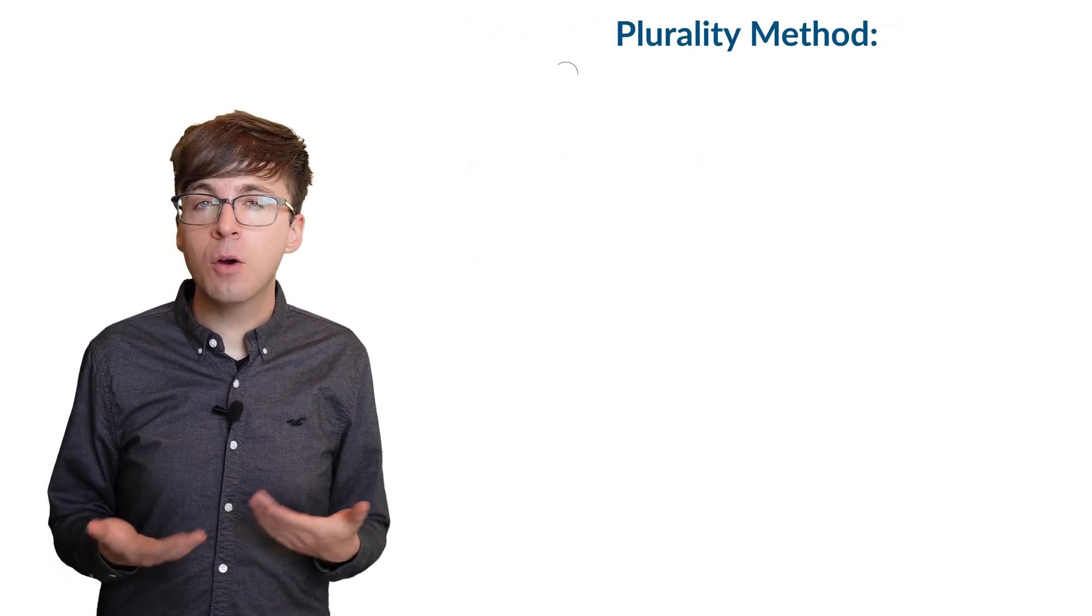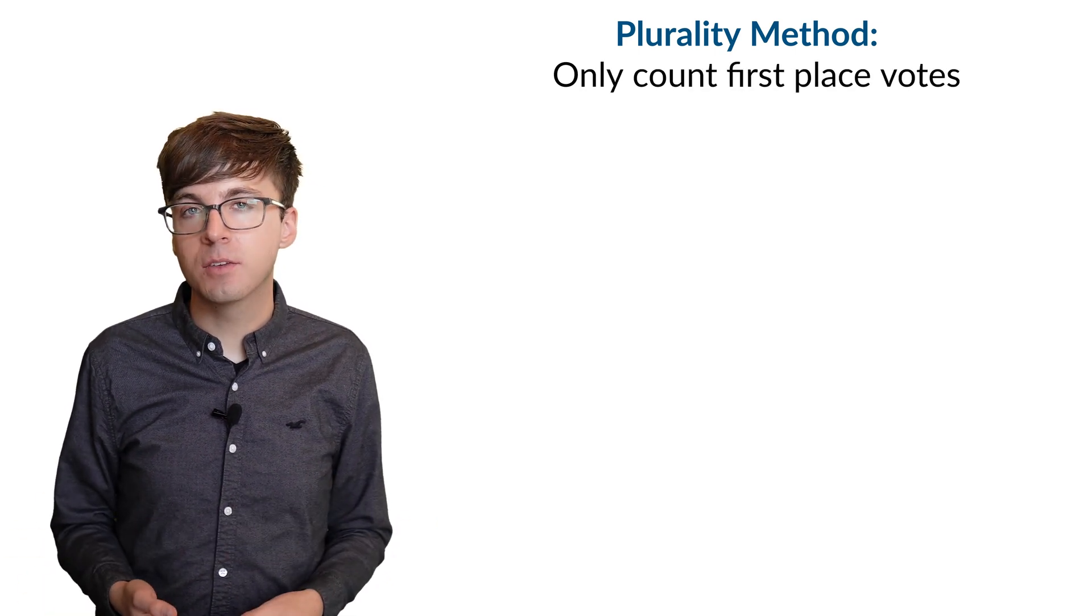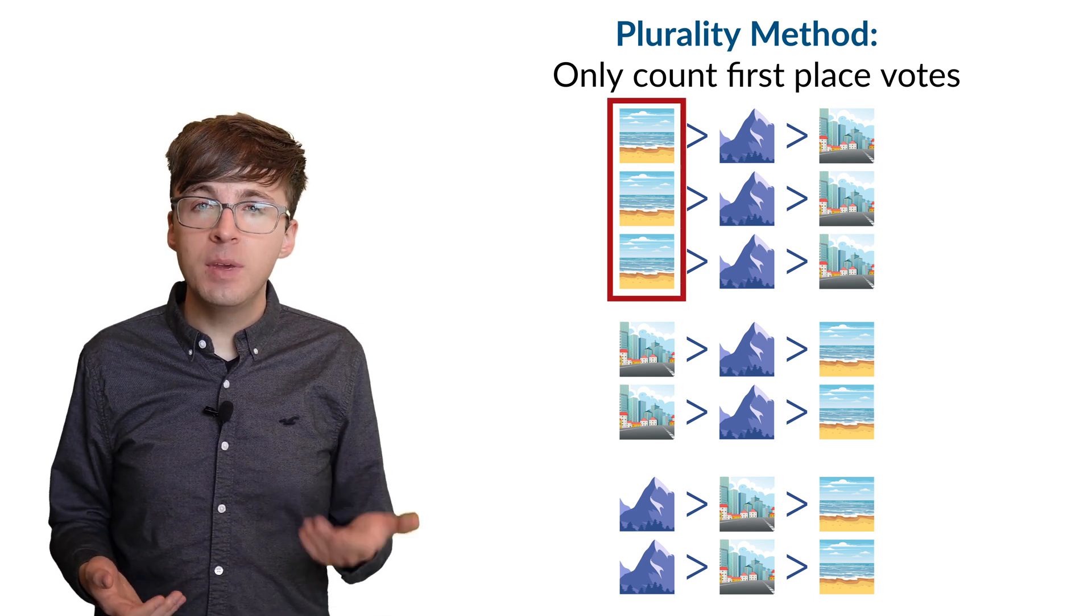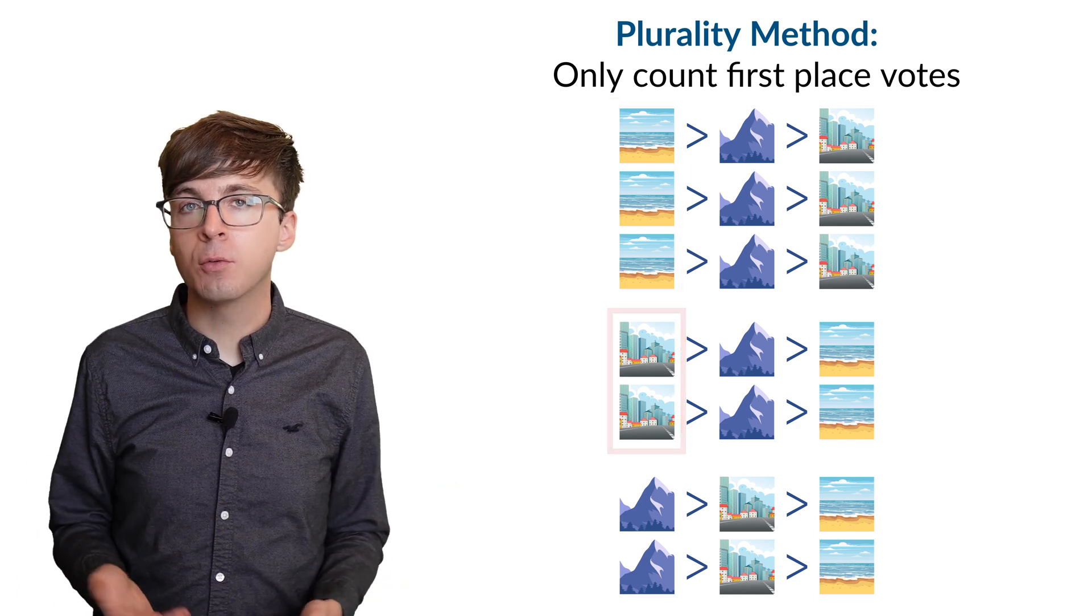For example, we might try a plurality method where we only count everyone's first place votes, and we ignore all the other rankings. Consider these rankings. With plurality voting, beach will win with three votes, compared to two for city and two for mountains.